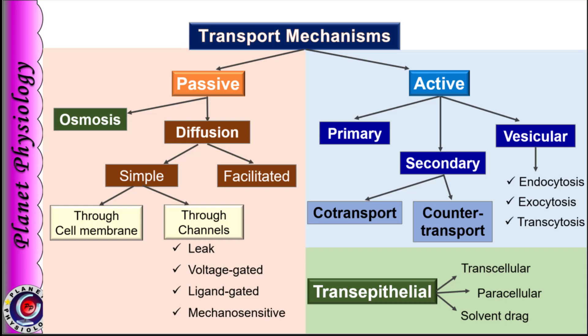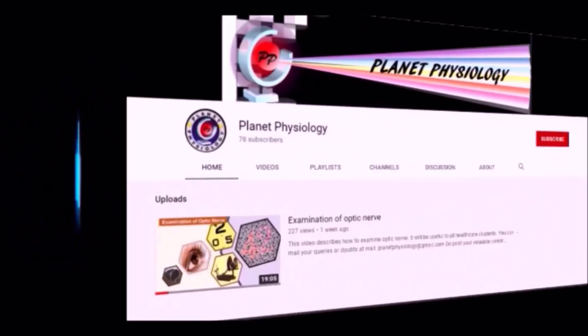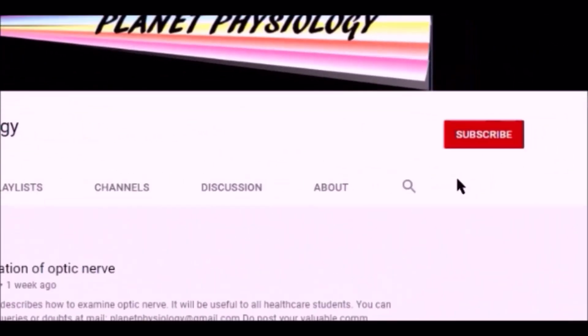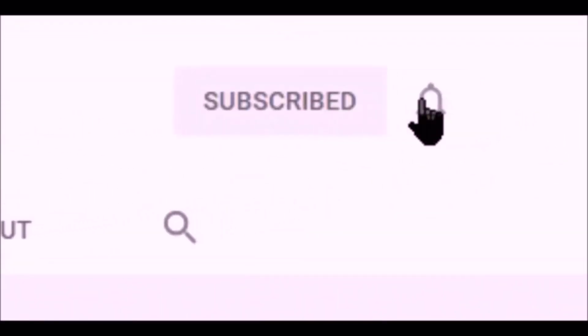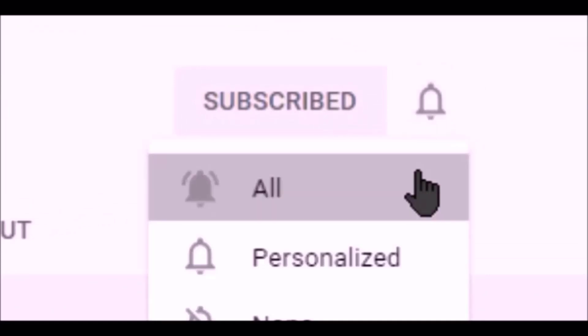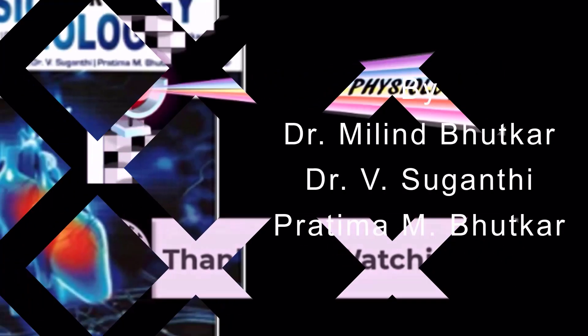If you get a 2-mark question on the classification of transport mechanisms across the cell membrane, this flowchart or mind map will be sufficient. That's all about the classification of transport mechanisms. In the next part, we shall study diffusion in detail. Thank you. If you enjoy my presentations, press the like button and share it with your friends. For more such videos, subscribe to my channel and click the bell icon. Thank you for watching and see you in the next video.